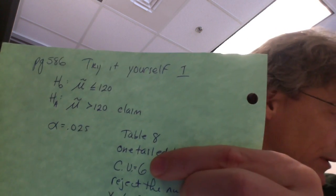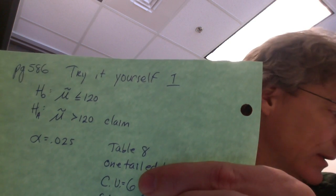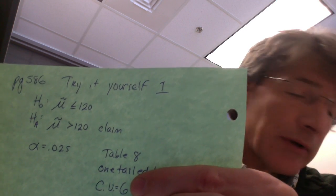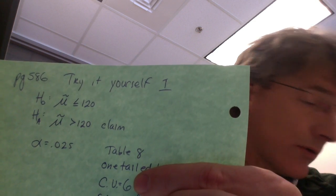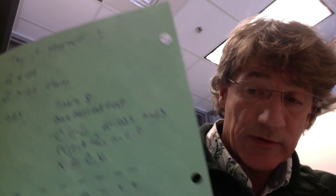And in the table, it actually has a spot that says, reject the null hypothesis when the test statistic is equal to or less than. So you want to make sure that you read that, because it tells you what you're supposed to do.